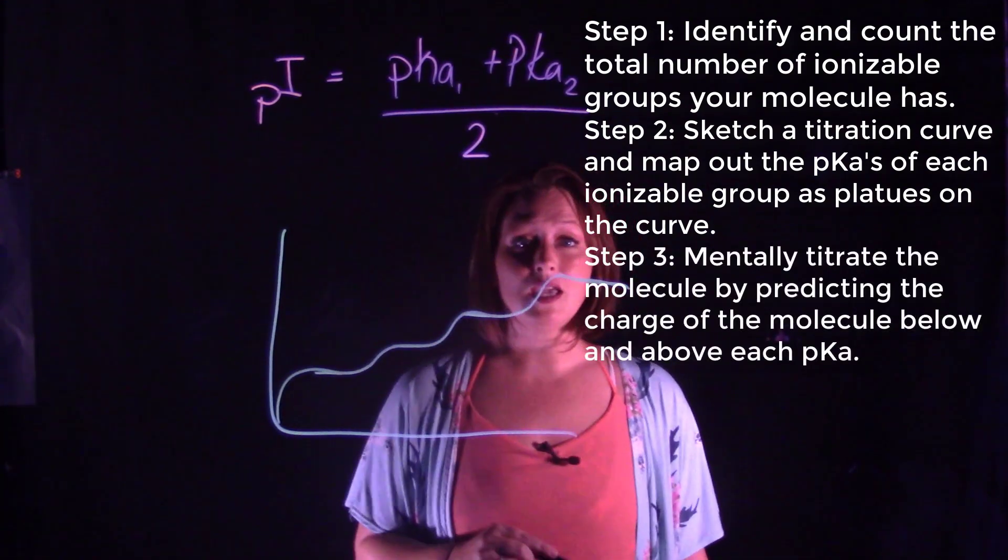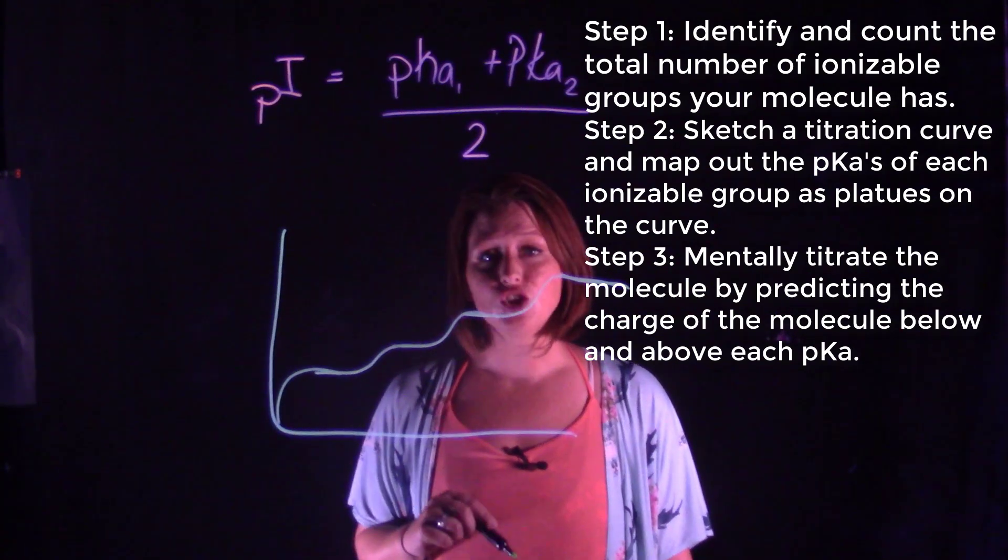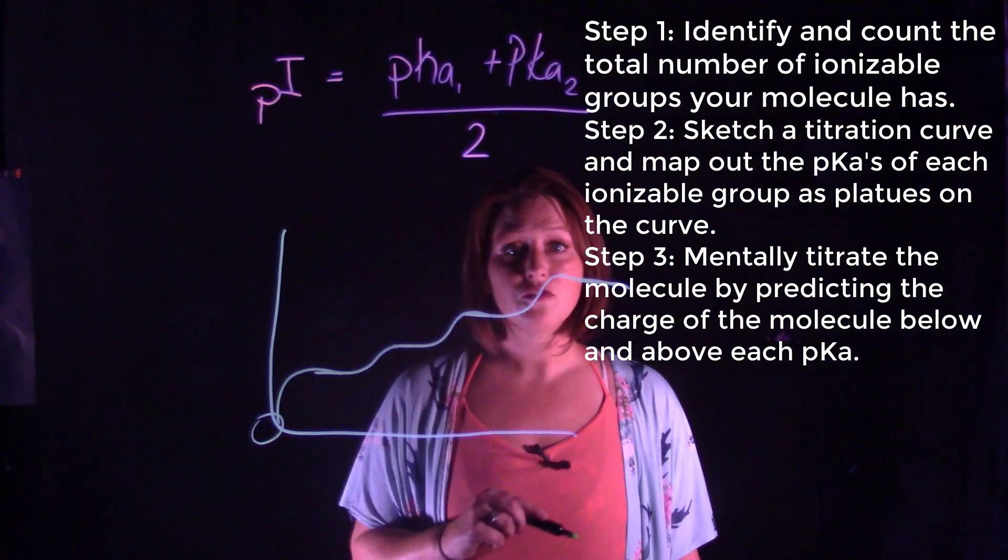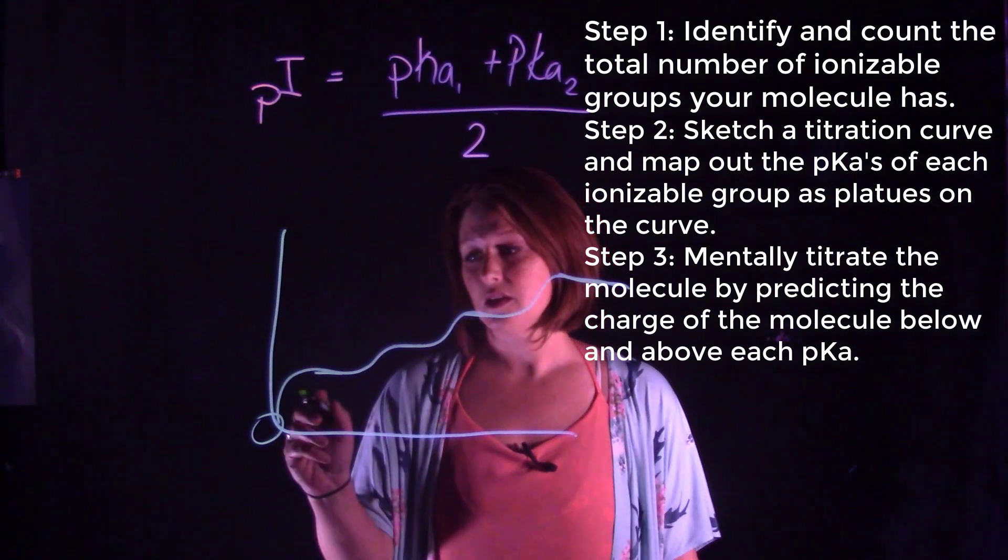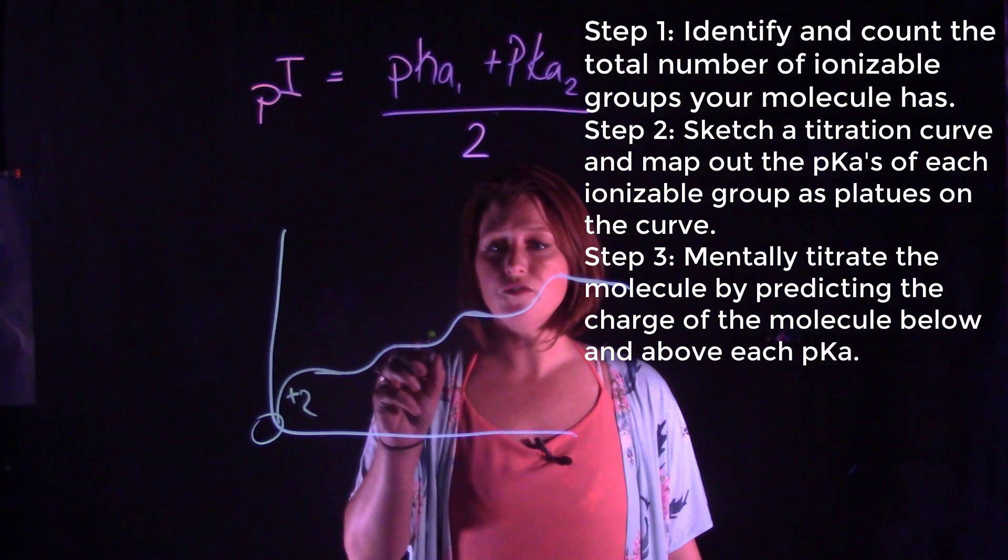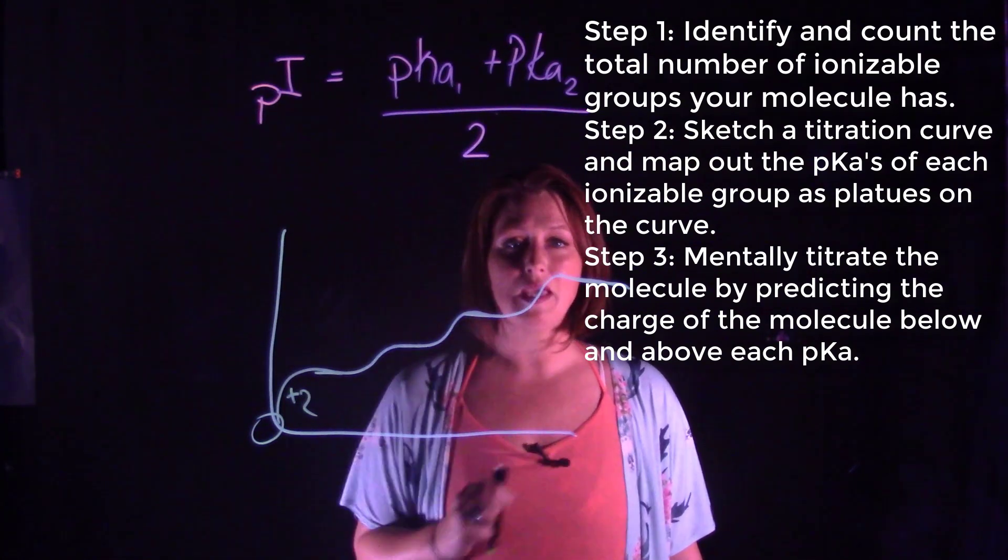In step three, you're going to mentally titrate your polypeptide starting at the most acidic, fully protonated group. Let's say we have a plus two, then you're going to walk yourself up each step, each pKa at a time, losing a charge.